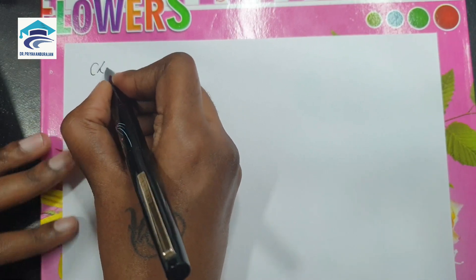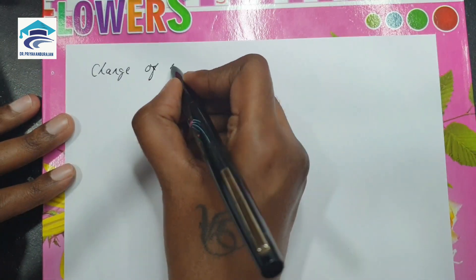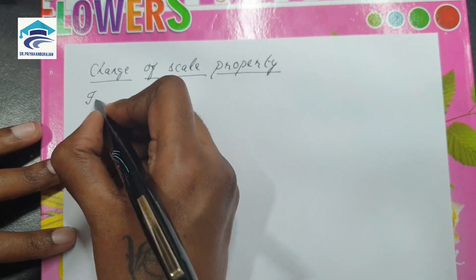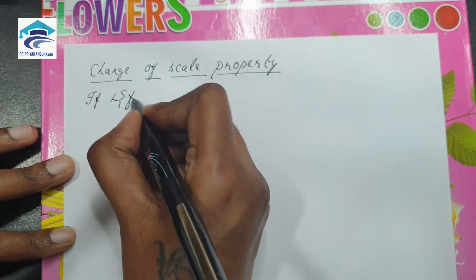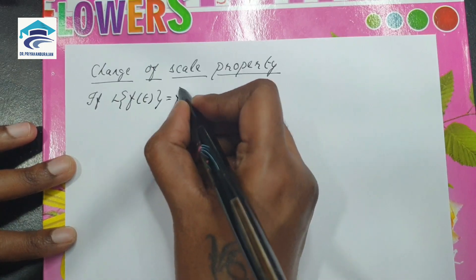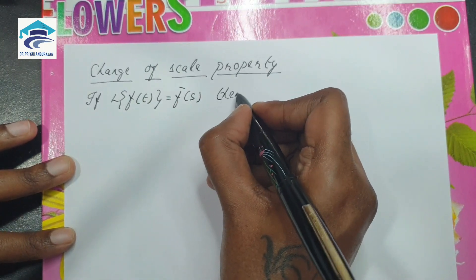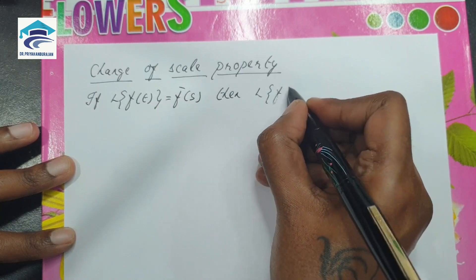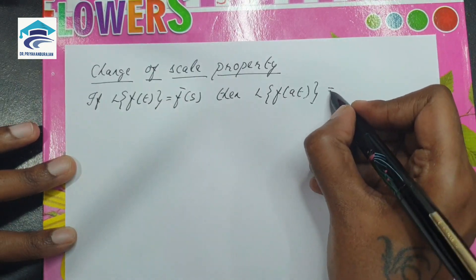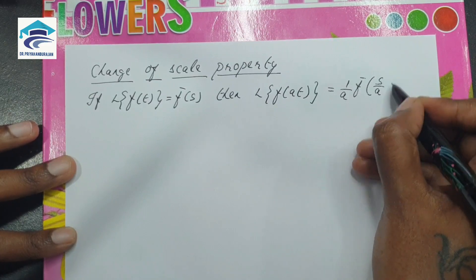Next, we are going to see the change of scale property. This property states that if L of f(t) is equal to F̄(s), then L of f(at) is equal to (1/a) F̄(s/a).